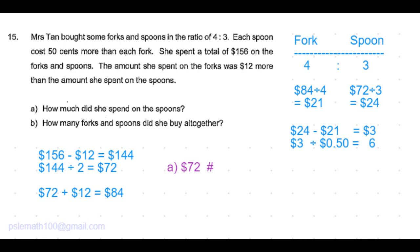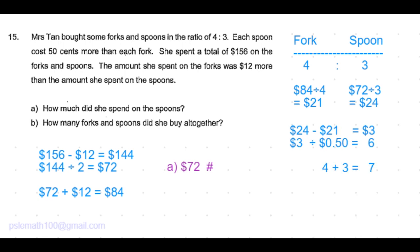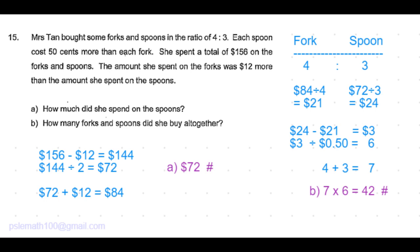Part B of the question is: how many forks and spoons did she buy altogether? The total number of parts is 4 parts forks and 3 parts spoons, giving a total of 7 parts. Each part has 6 forks or spoons, so 6 times 7 is equal to 42 forks and spoons altogether.